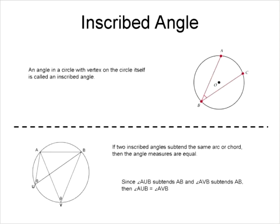Let's look at another angle: an inscribed angle. An inscribed angle is an angle in a circle with a vertex on the circle itself. What this means is we go from the edge of the circle, cross the circle, and back to the edge. The angle formed in between is the inscribed angle. The inscribed angle is different from a central angle because it goes from the edge of the circle — not to the center — but to the other side of the circle.